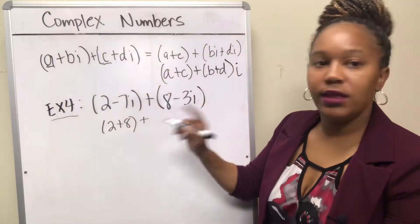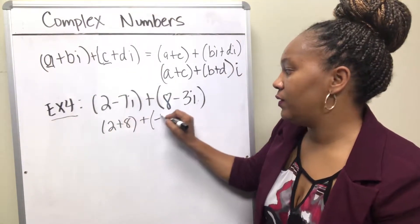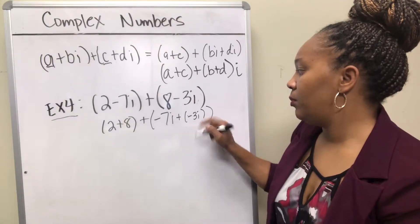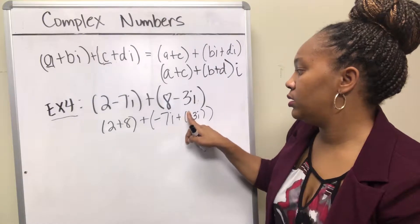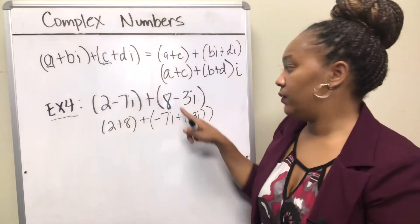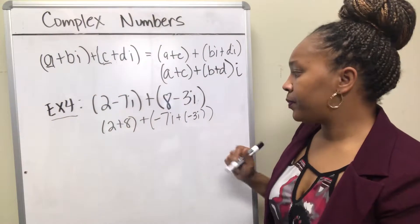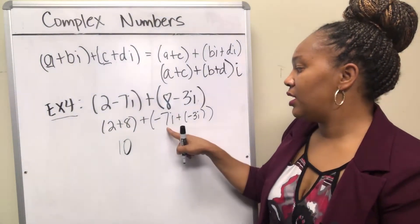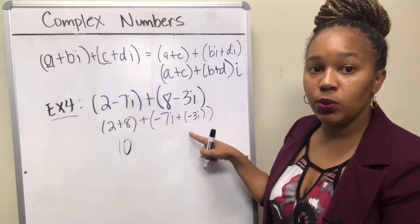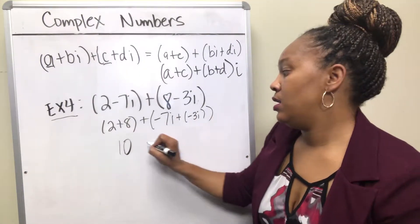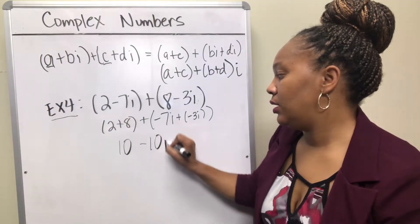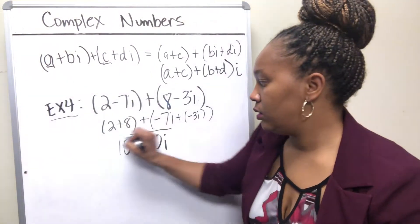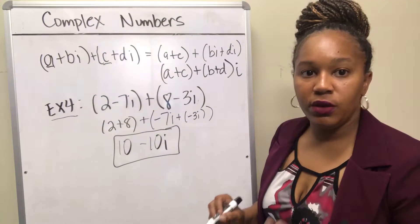And you want to add the imaginary parts together, so negative 7i plus negative 3i. I'm putting another parentheses in here because the 3i is negative, so this minus sign stays with that 3i. So 2 plus 8 is 10, and then negative 7 minus 3 is negative 10, so that would be negative 10i. And so that's how you add complex numbers. 10 minus 10i will be your final answer.